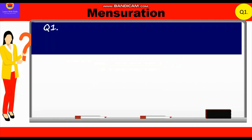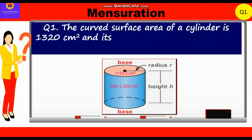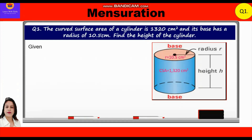Question 1. The curved surface area of a cylinder is 1320 cm² and its base has a radius of 10.5 cm. Find the height of the cylinder. Given: curved surface area is equal to 1320 cm², radius is equal to 10.5 cm, and we have to find the height of the cylinder.